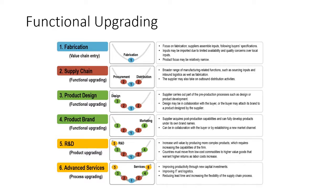Product branding is also done in collaboration with the buyer and is another form of functional upgrading for the product. The supplier can acquire post-production capabilities and can fully develop products under its own name. After that, we move on to adding an additional layer — R&D — which involves increasing units and upgrading the production firm depending on the country and the cost.